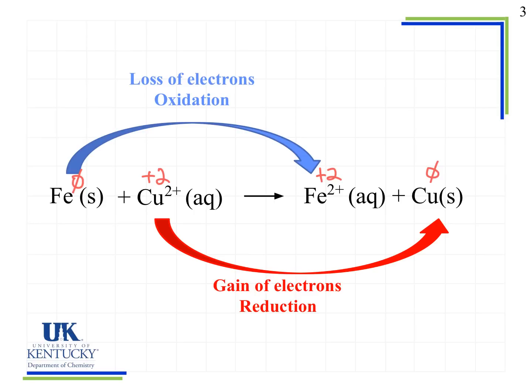Looking at copper, we see it goes from plus two to zero. That's a reduction — a decrease in the oxidation number. We have the gain of electrons, because going from plus two to zero means gaining negative charge to reduce that number down. So the reaction from copper two plus to copper is known as a reduction.